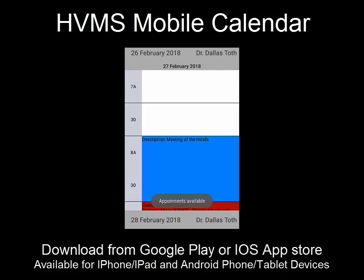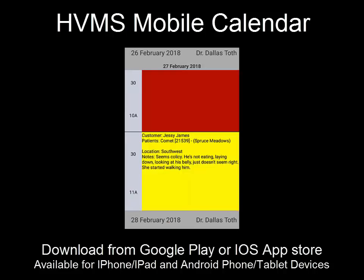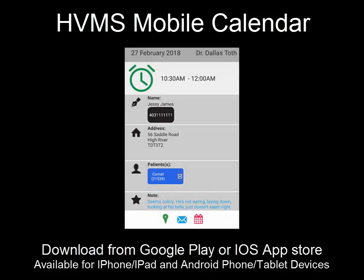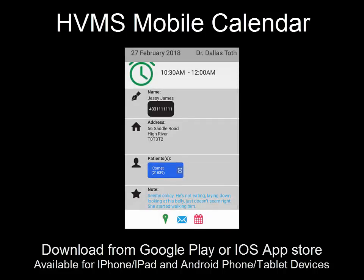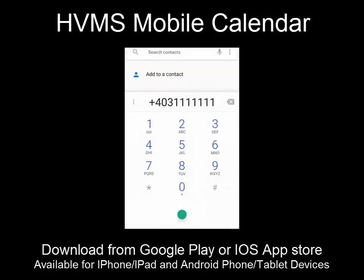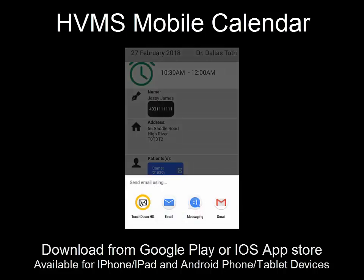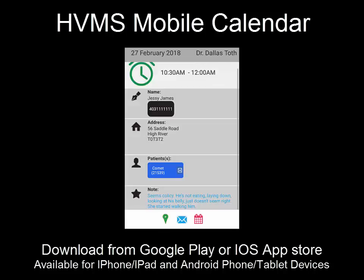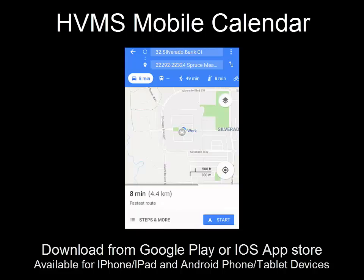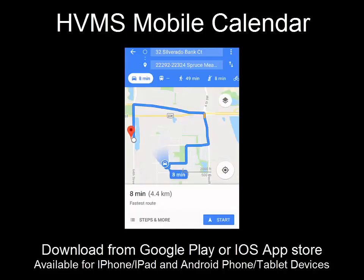When you're wanting to look at an appointment, just click the appointment and you'll see more detail. You can use the phone number to send text messages. You can use the email in order to send yourself an email based on the appointment that just took place. There's also a GPS icon on the bottom left hand corner which will allow you to navigate from your current location to the location of the appointment.